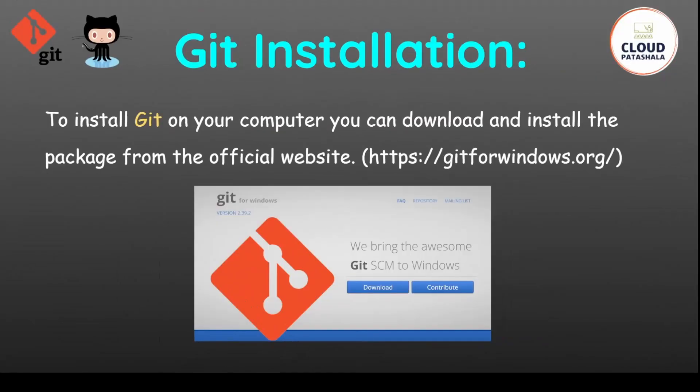For this we would have to go to the website git-for-windows.org and download the exe file. Once the exe file is downloaded we have to run it and complete the installation process on the machine.